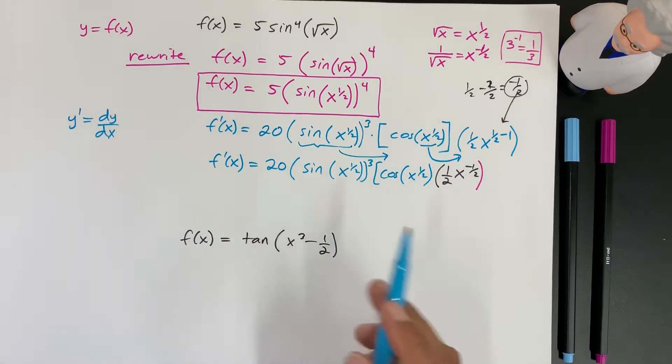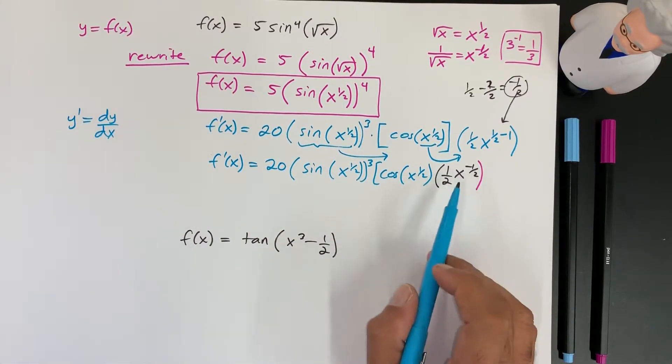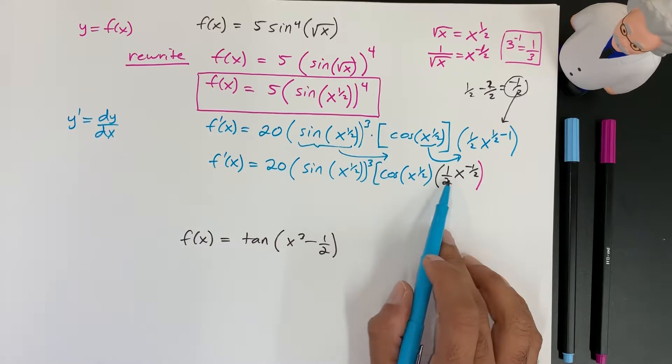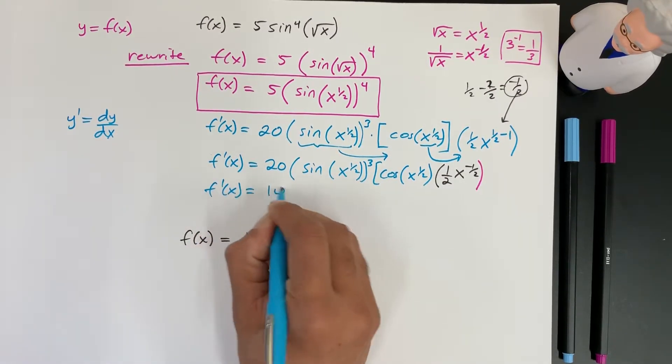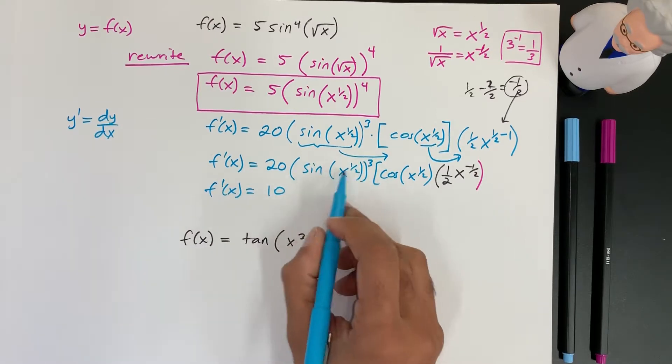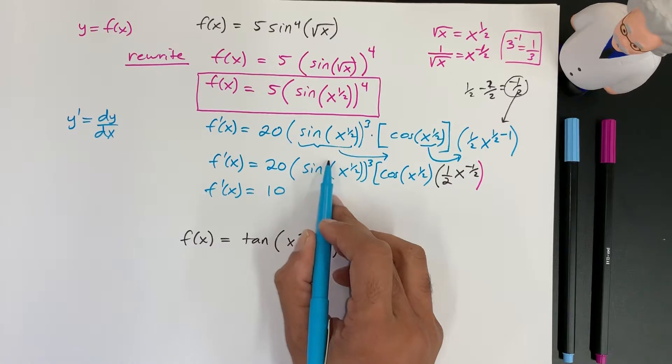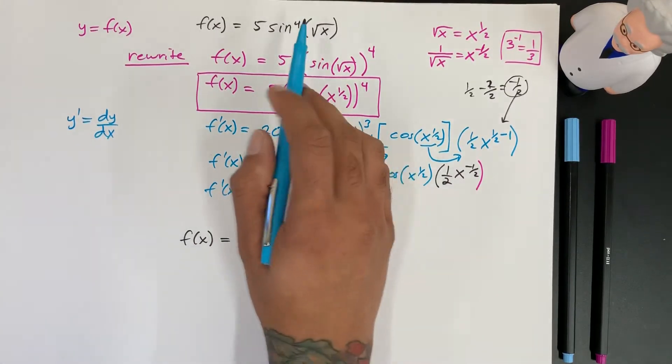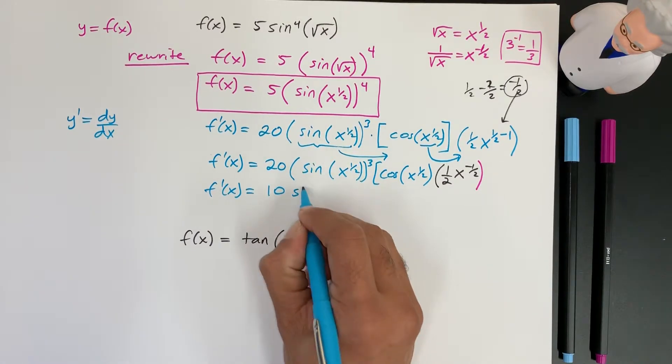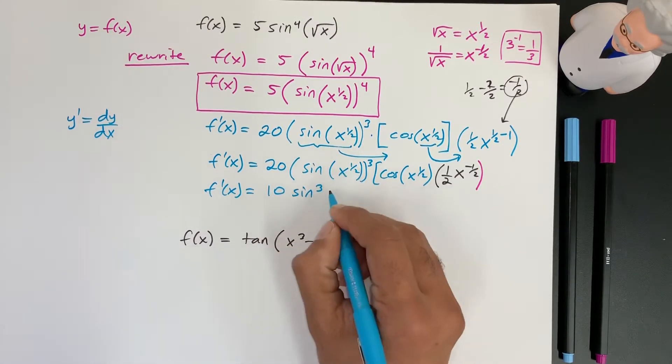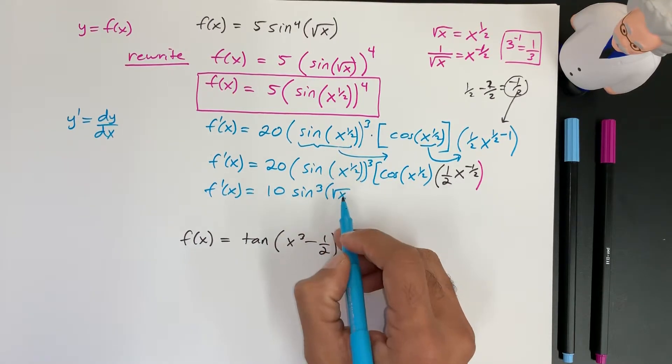So we're going to write everything here out a little more neatly. So we got 20 and we got a 2, so that makes it 10. So we got 10. Here I can bring back this 3 to be here. It doesn't matter, but just to show that we can rewrite it back to its original form, we have sine cubed of the square root of x. Right, this is the same thing as saying square root.